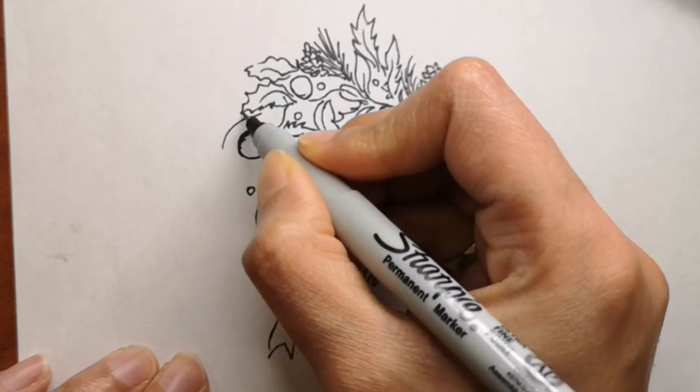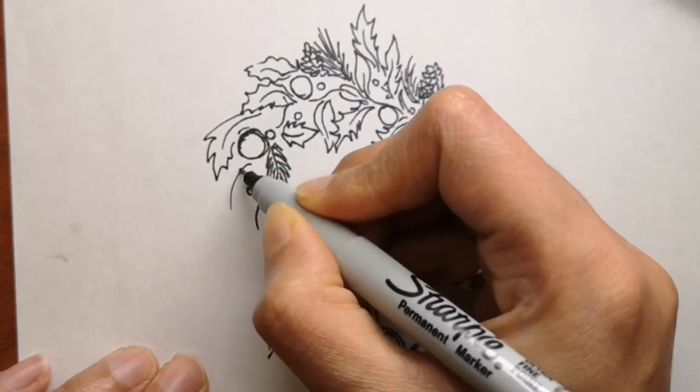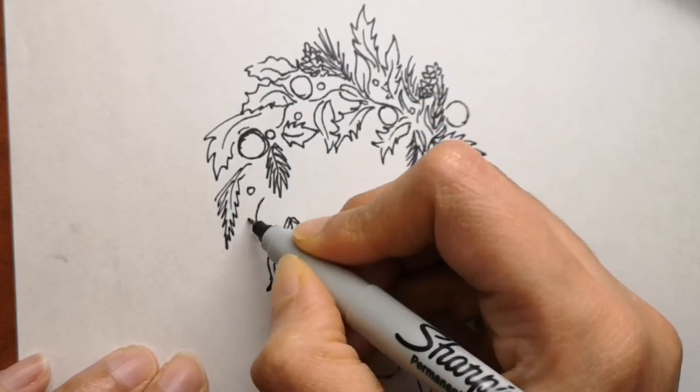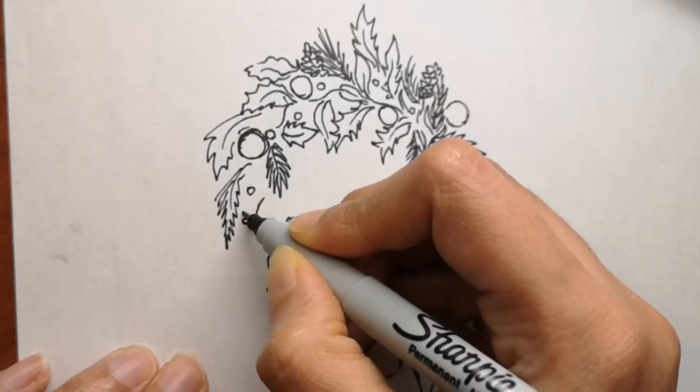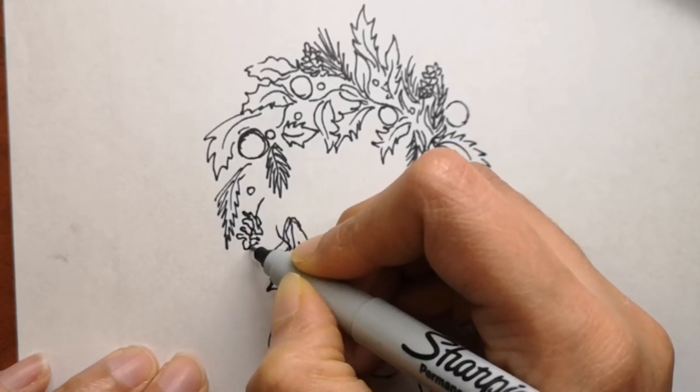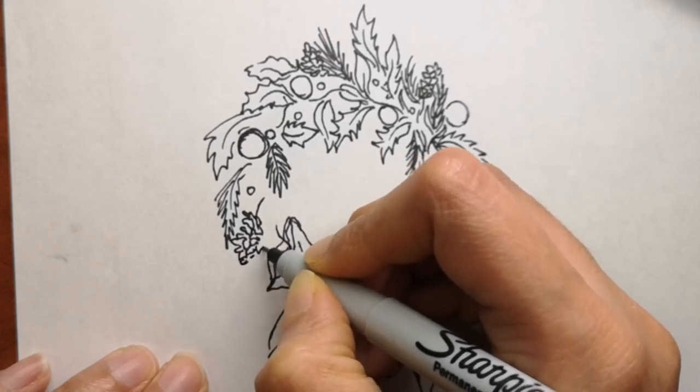Traditionally Christmas wreaths contained four candles, three purple and one pink with one lit each week in December often on Sunday. A fifth white candle was sometimes also included. Isn't that interesting? That's very new to me.